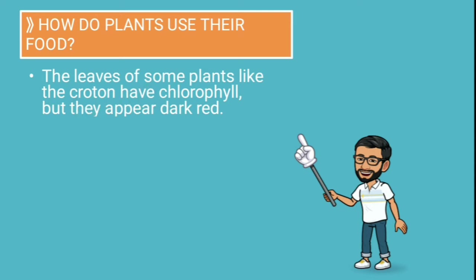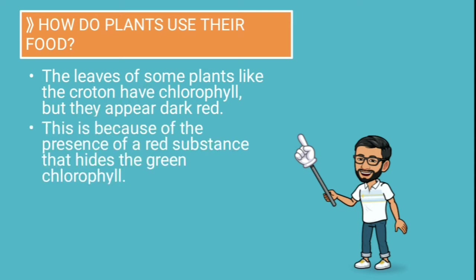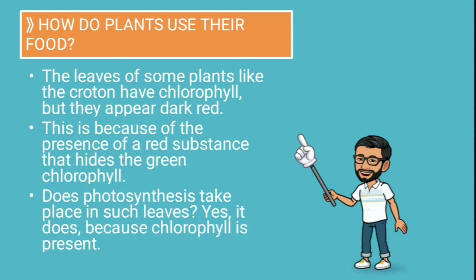The leaves of some plants like croton have chlorophyll, but they appear dark red because of the presence of a red-colored pigment — a substance that hides the green-colored chlorophyll. Does photosynthesis take place in such leaves? The answer is yes, because chlorophyll is present. We just cannot see it because of the red-colored pigment.